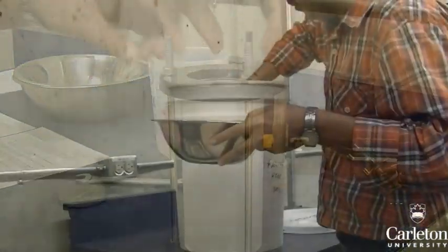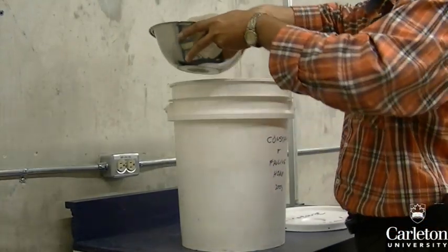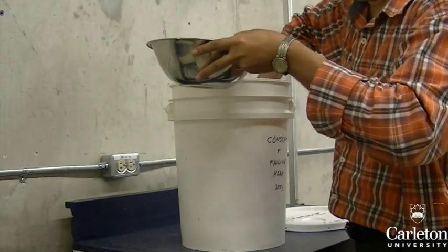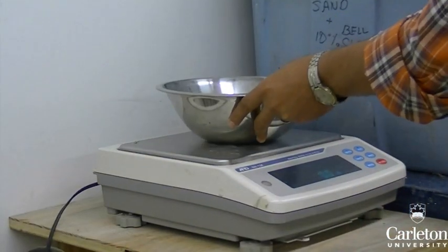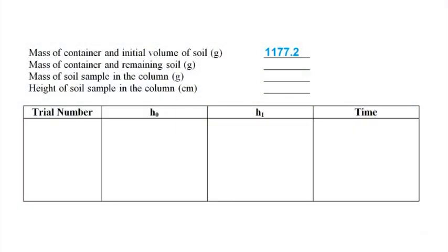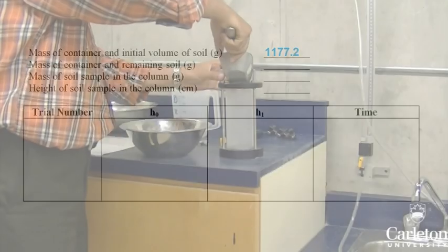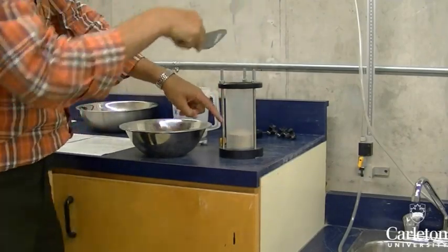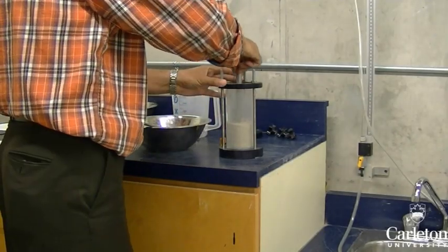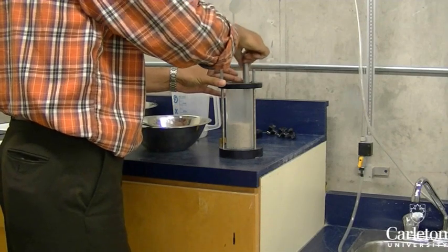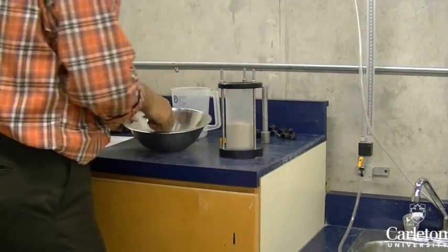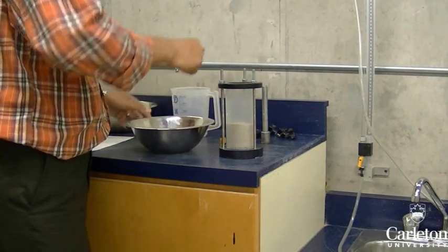Now obtain a soil sample. Similarly to the constant head test, measure out approximately one kilogram of soil into a container and record the mass of the container plus soil. Place the soil in the test cylinder. Again, compacting the soil into about three layers. In this experiment we are using a fine grained sand, although this test is best done with silts or clays.